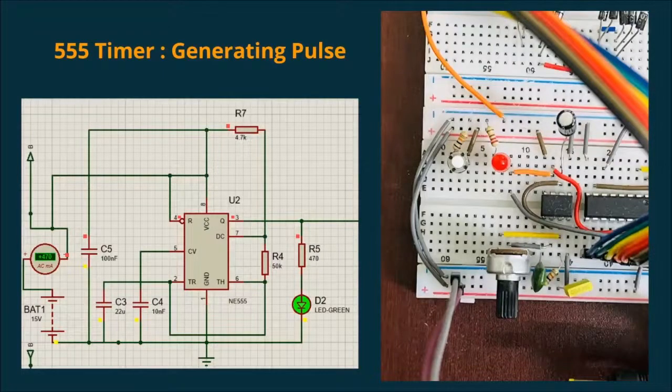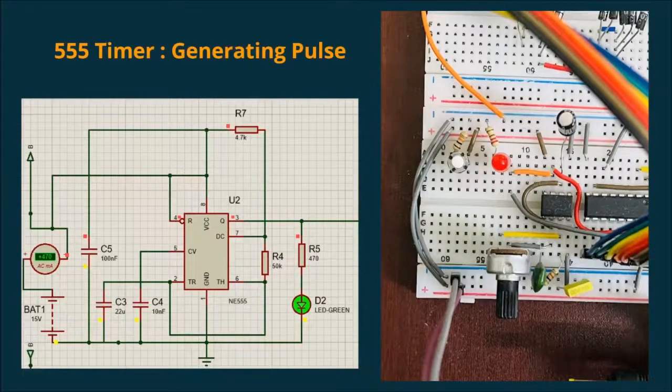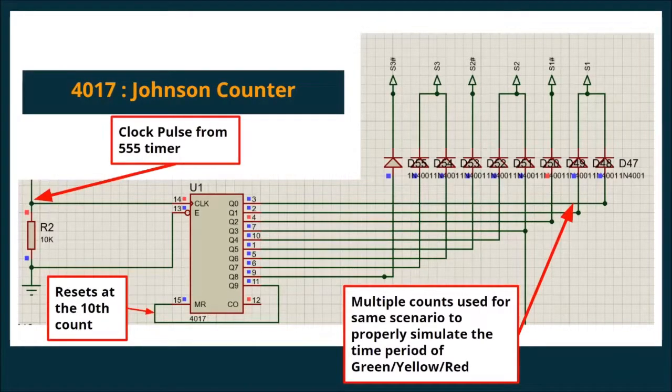Now, the next thing that we needed is a decade counter. For that, we have used the 4017 which is a Johnson counter. In this counter, we can see that the connection is given such that the 555 timer clock pulses is given to the 14th pin. We have used 9 of the 10 outputs of the decade counter. The last output has been fed back to the master's reset pin such that the counter resets after the 9th output.